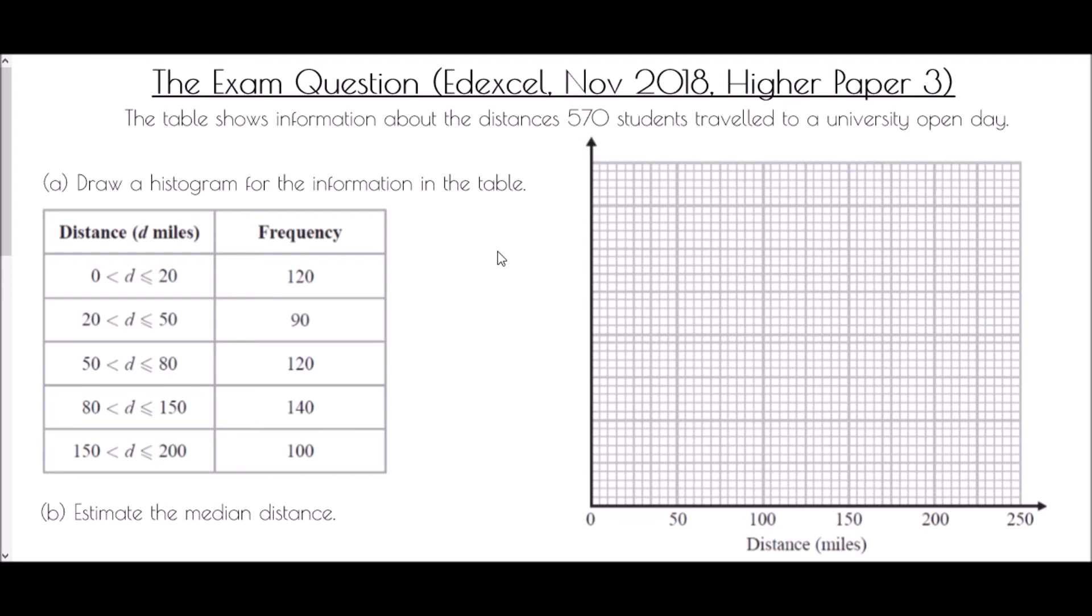So as we need to draw the histogram the first thing we need to do here is we need to add in our extra columns for our frequency density and our width. And we want to make sure that we can then draw that onto the graph.